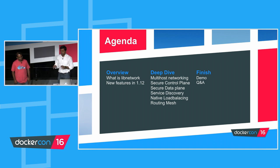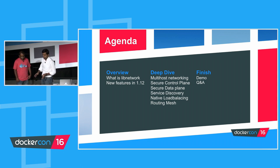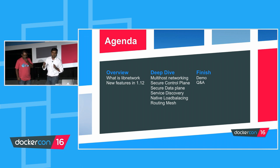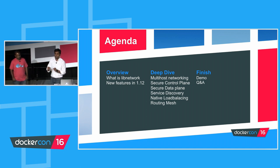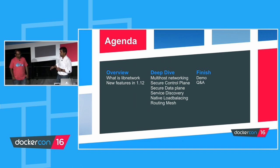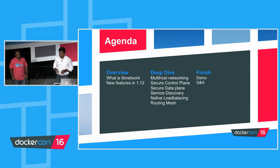We will cover a high-level overview of what libnetwork is — there has been a lot of confusion about what libnetwork is and what it must be. We want to cover what it is, what we are targeting to achieve, and how multiple projects can make use of it. We will spend more time on the 1.12 features, especially on the swarm mode, which was part of the keynote yesterday. Jana will cover multi-host networking, secure control plane, data plane, built-in service discovery, load balancing, routing mesh, and so on.